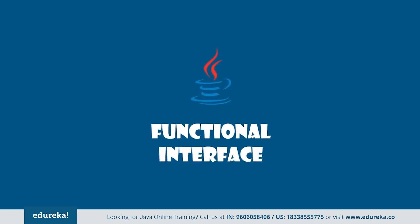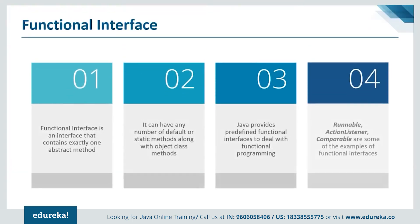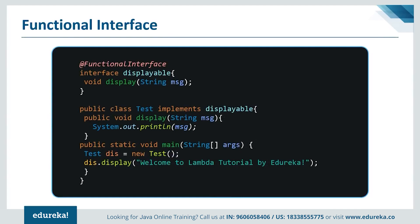Before we begin with lambda expressions, we need to understand the functional interface, because the entire concept of lambda revolves around it. A functional interface is an interface in Java that contains exactly one abstract method. Examples include the Runnable interface, ActionListener with its actionPerformed method. We can have any number of default or static methods. Java provides predefined functional interfaces — Runnable, ActionListener, Comparable are some examples.